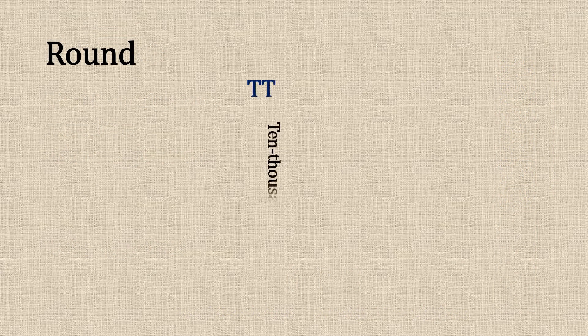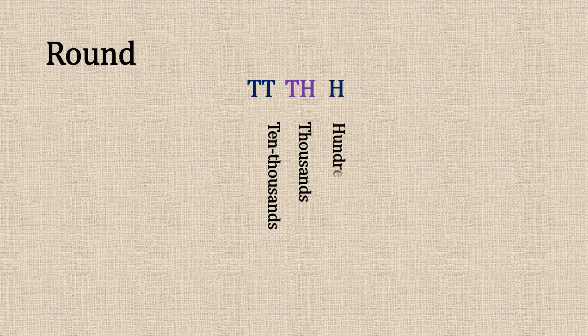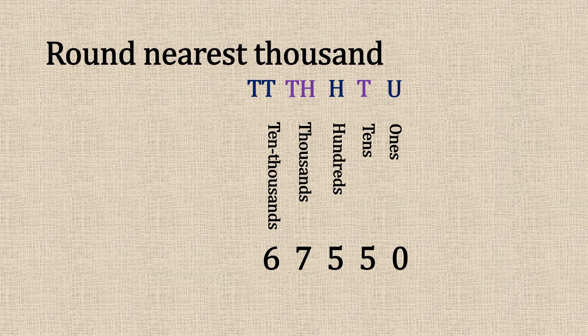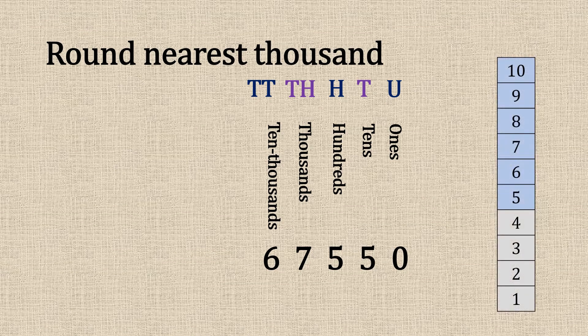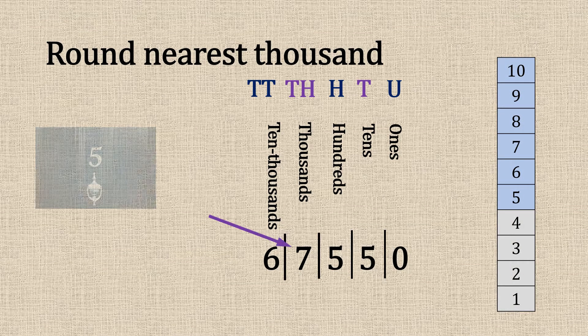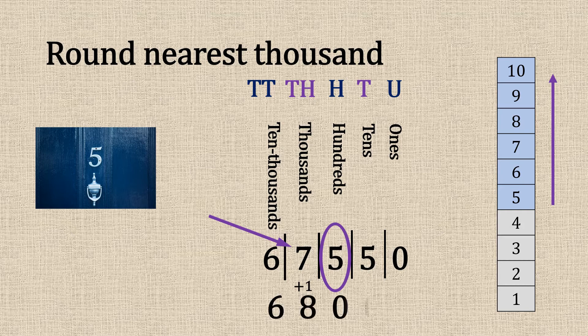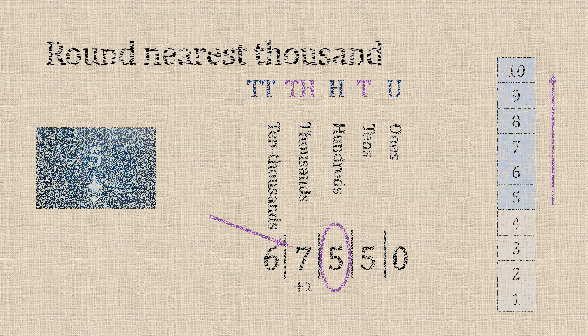We need to learn the place values: ten thousands, thousands, hundreds, tens, and units, which is where our ones are. Here's our number. We're going to round this to the nearest thousand. In our thousand column is a seven, and the neighbor is a five, so we know that's high. We're going to add a one to that, which rounds it up to eight and changes the whole number to 68,000.